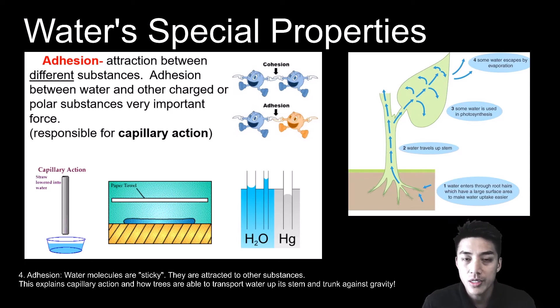So water is transported up through the stems and trunks of certain plants and trees against the force of gravity because of adhesion. The water molecules tend to stick along the sides of the stem and they travel upwards.